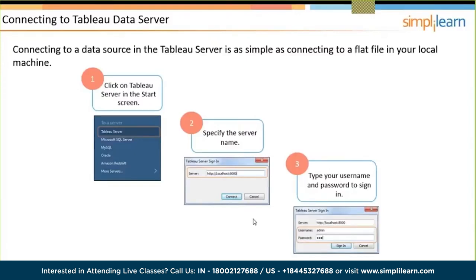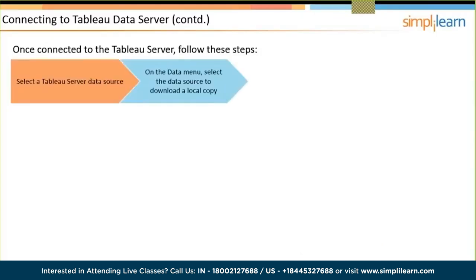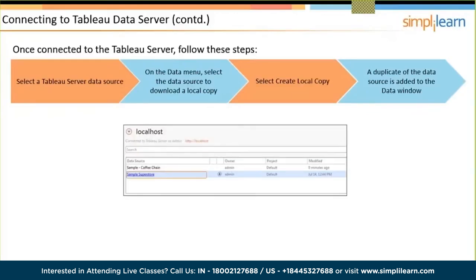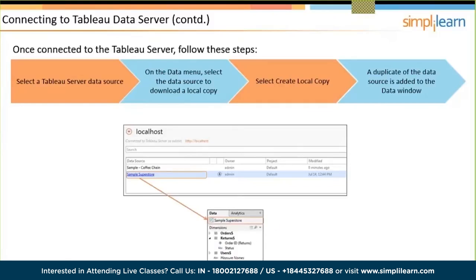Once connected to the Tableau server, you need to select the Tableau server data source. On the data menu, select the data source to download a local copy. You can also duplicate that data source — a duplicate will be added to your data window. For example, you can connect to the Tableau server as an admin, connect to the Sample Superstore, and it downloads and creates a local copy duplicating all the data in the data window.